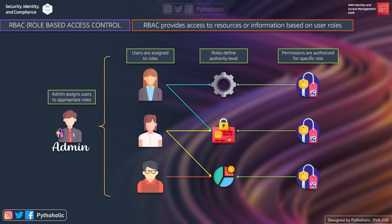In IAM, if you want RBAC, we can implement it by creating different policies for different job functions. However, the disadvantage of using the traditional RBAC model is that when employees add new resources, you must update policies to allow access to those resources.